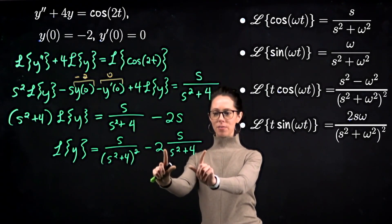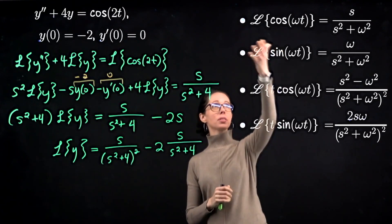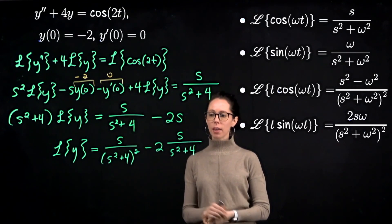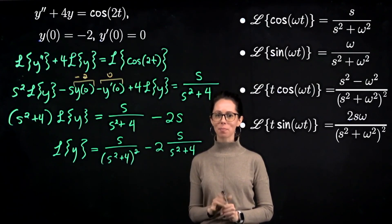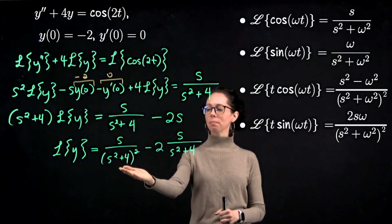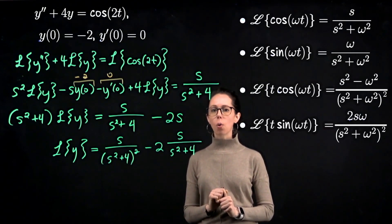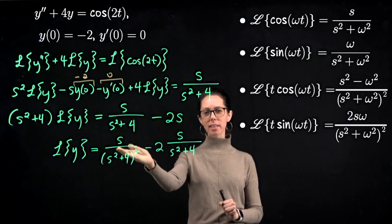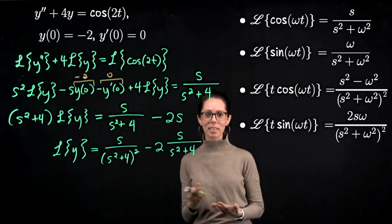The second fraction, s over s squared plus 4, is exactly the Laplace transform of cosine of 2t. With the leading negative 2 in front, inverting that expression gives negative 2 times cosine of 2t. For the first piece, because of the s in the numerator over s squared plus 4 squared, it looks most like t times sine.